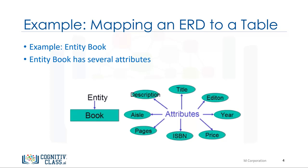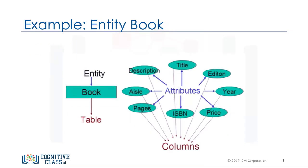For ease of understanding let's separate the entity from the attributes. In this case Entity Book becomes a table with the same name Book. All the attributes translate into columns in the table.